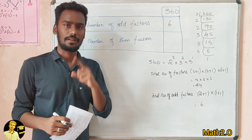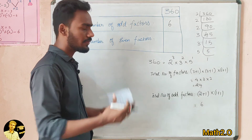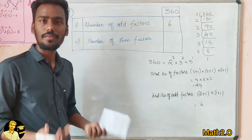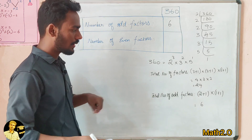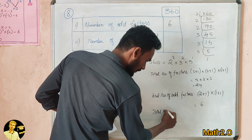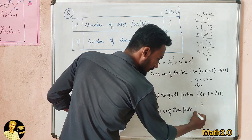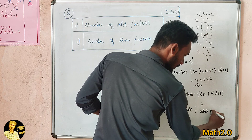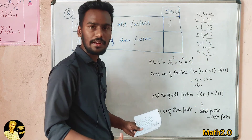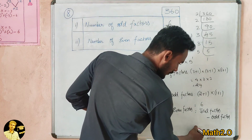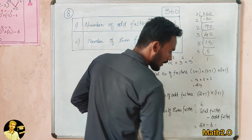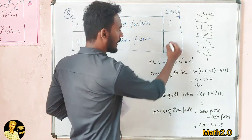Now, the total number of even factors. How do we get the number of even factors? Total number of even factors is equal to total factors minus odd factors. Total factors equal 24 and odd factors equal 6, so 24 minus 6 equals 18. The total number of even factors is 18.